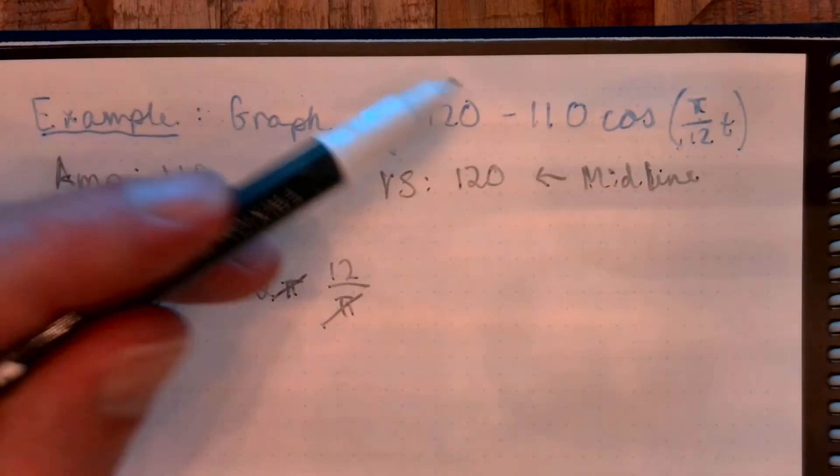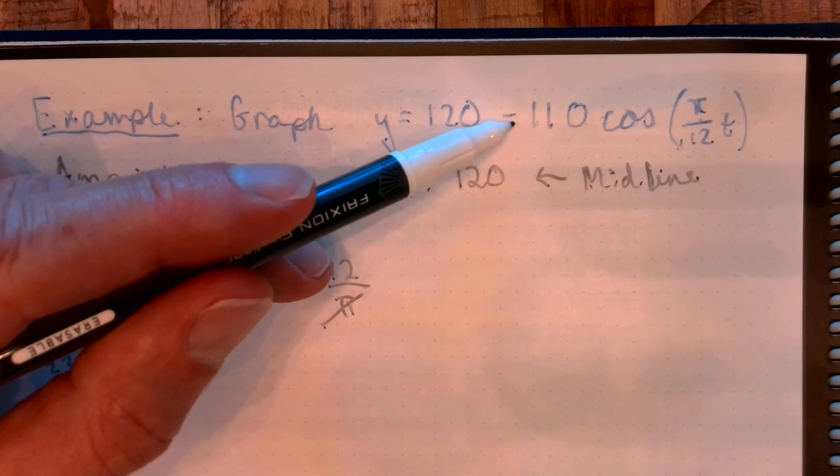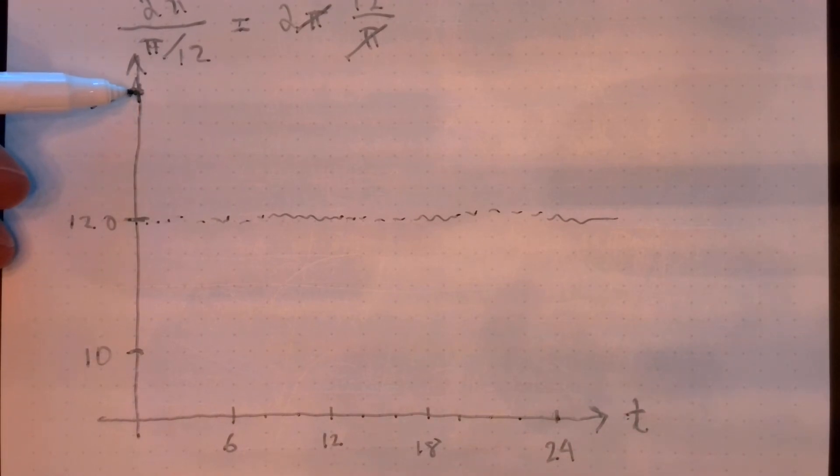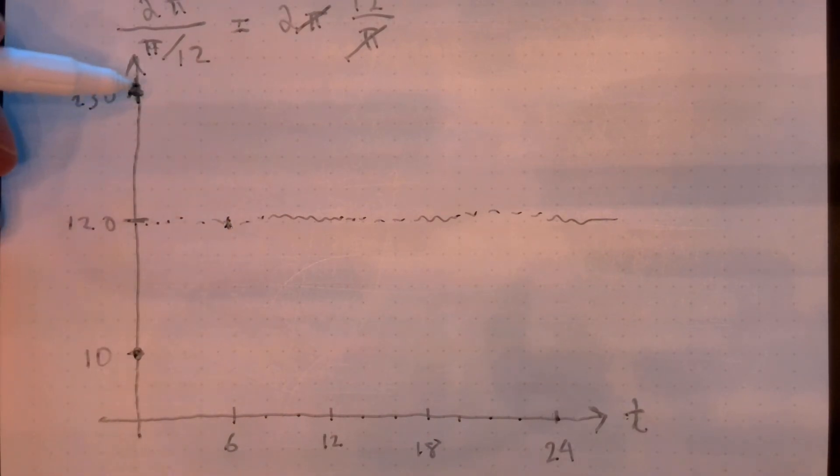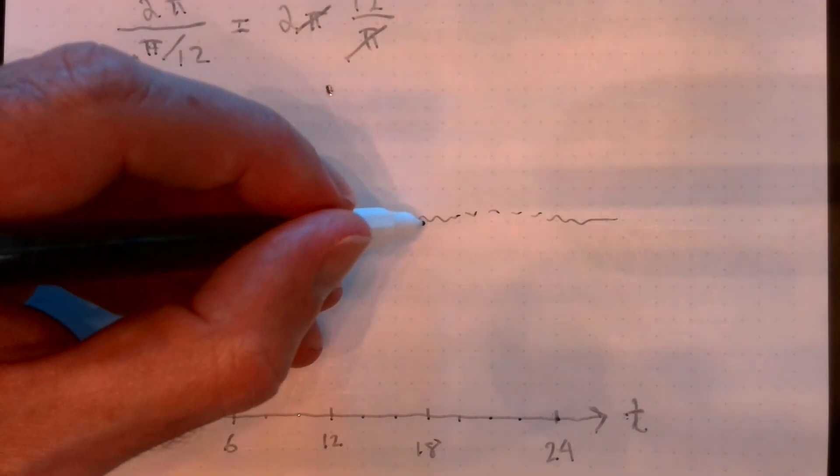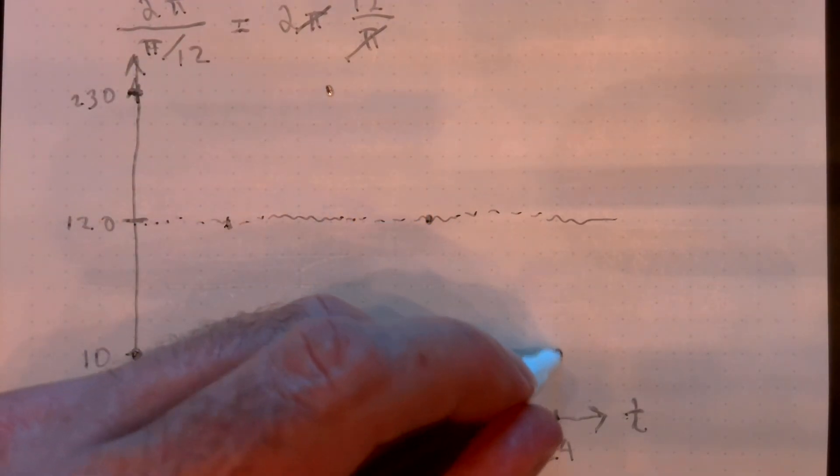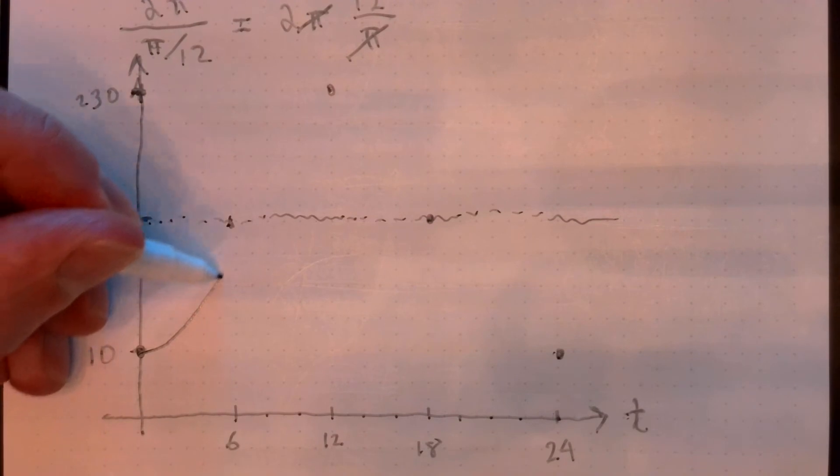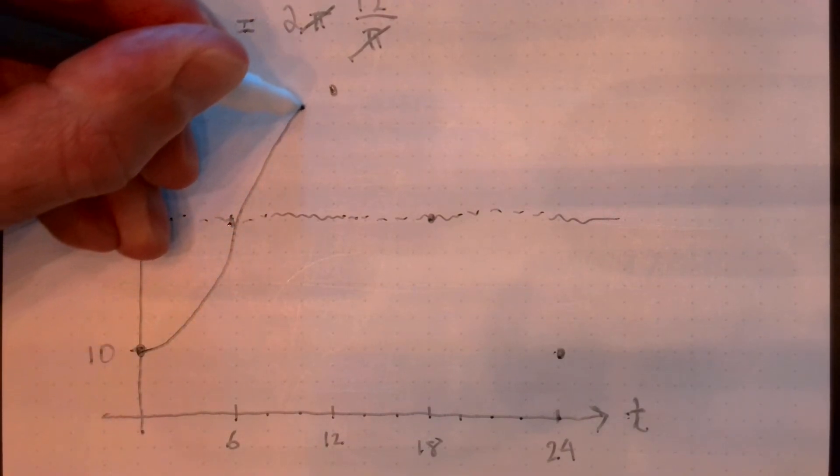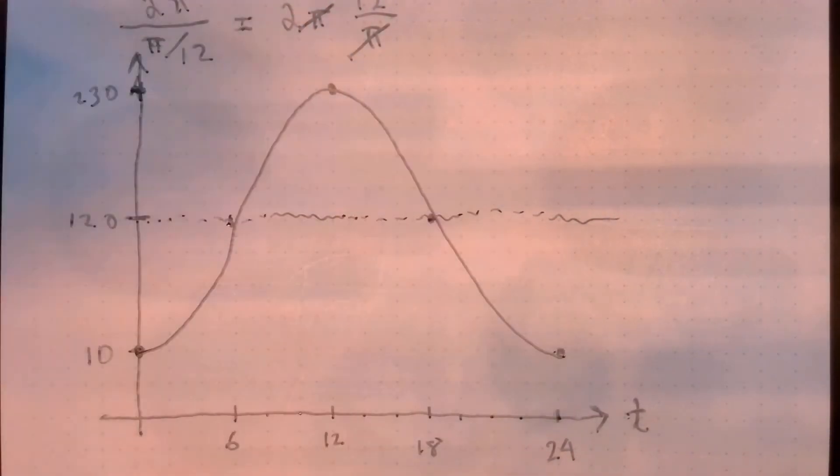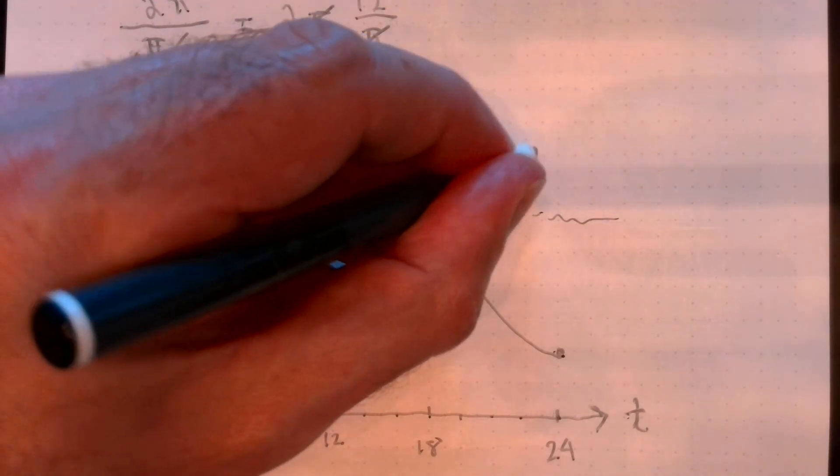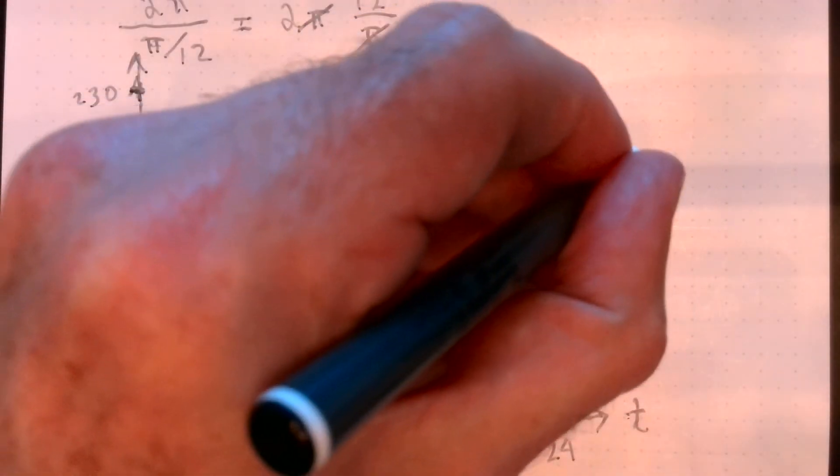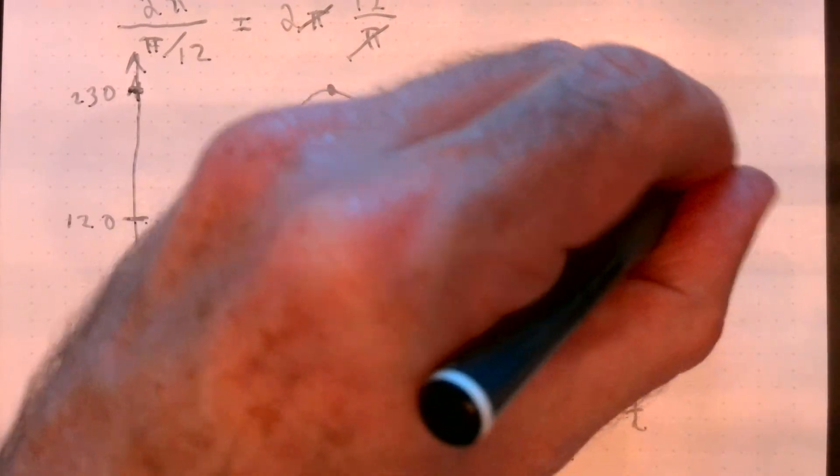Now, also notice this negative, that's going to flip the graph vertically. So ordinarily, cosine starts at the top of the cycle. We're flipped vertically. We're down here. Now we go to our midline, up top right here, back down to the midline, and then we bottom out. So we're going to connect these points with our nice smooth curve. And this is our graph for y equals 120 minus 110 cosine pi over 12t.